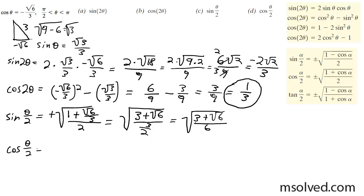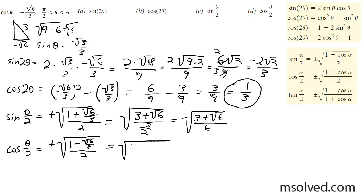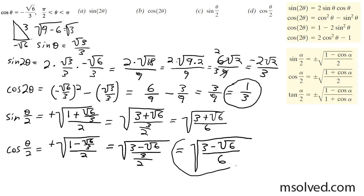Cosine of theta divided by 2 is also positive since it's in quadrant 1. The formula gives plus square root of 1 plus the cosine over 2. Since the cosine value is negative, it becomes minus square root of 6 over 3, all over 2. This equals square root of 3 minus root 6 over 3, over 2, which simplifies to square root of 3 minus root 6, divided by 6. That's how you apply all four formulas.